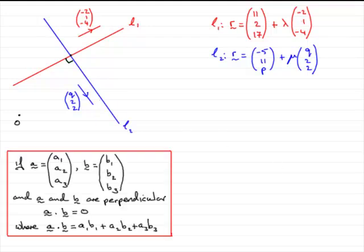Let me just remind you, you should know this rule, but if you've got two vectors A and B with components A1, A2, A3, B1, B2, B3, if A and B are perpendicular, then A dot B equals zero, where A dot B is calculated as A1 times B1 plus A2 times B2 plus A3 times B3.